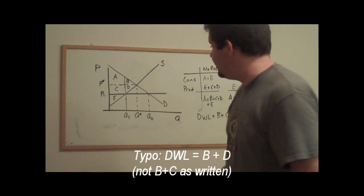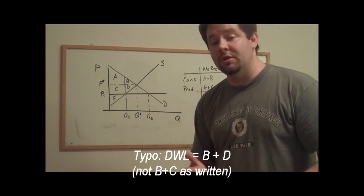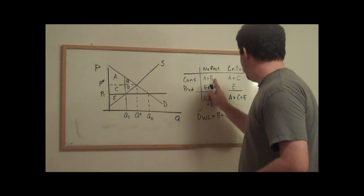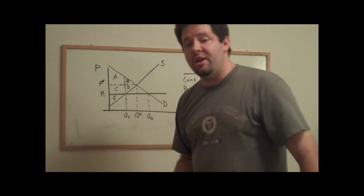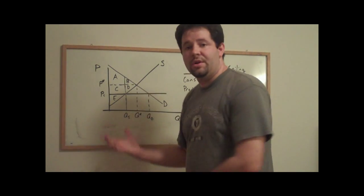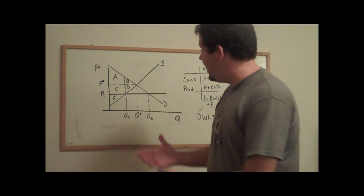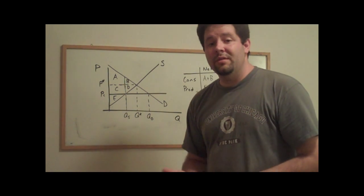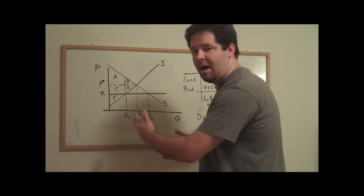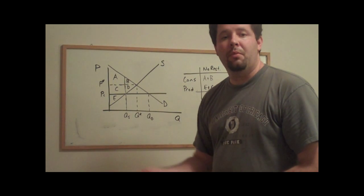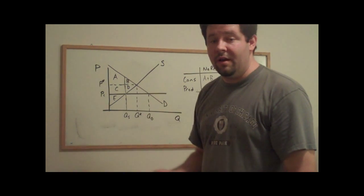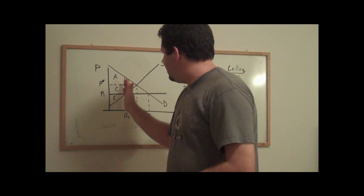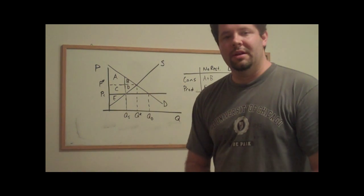One thing you'll notice is that it's not unambiguous that consumers are going to be made better off as a group. They have to give up area B in order to get area C. It depends on which area is bigger whether the consumers are going to like this price ceiling policy as a group. Area A plus C may or may not be bigger than area A plus B. If that deadweight loss is big enough, especially on the consumer side, we might actually reduce the consumer surplus and producer surplus at the same time.